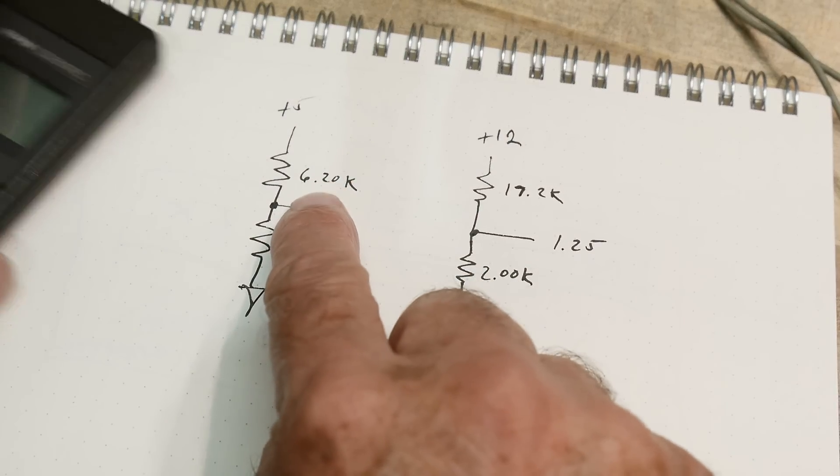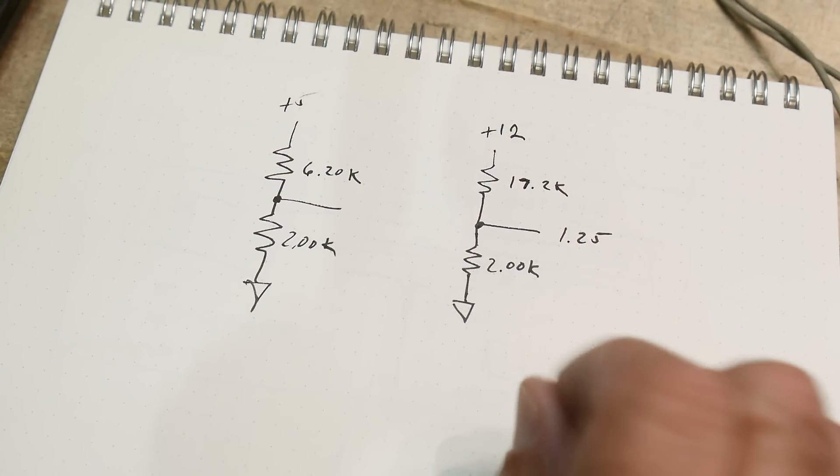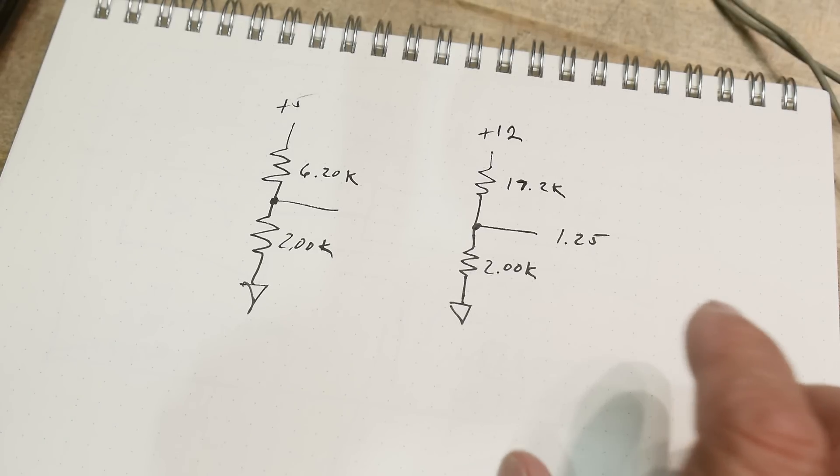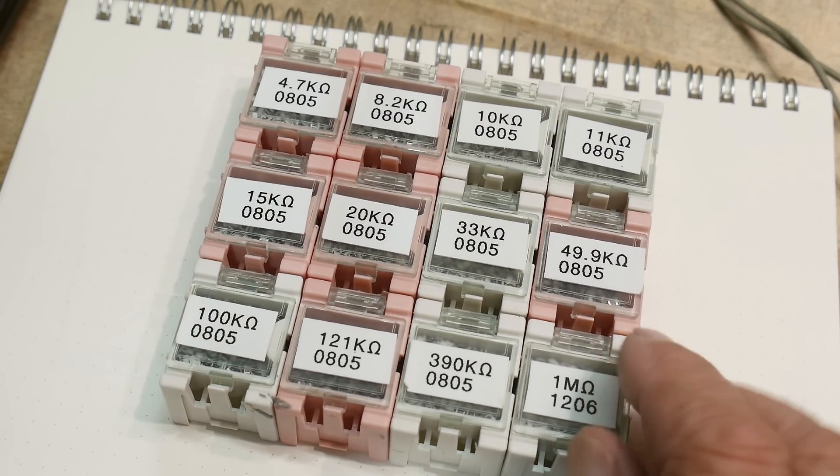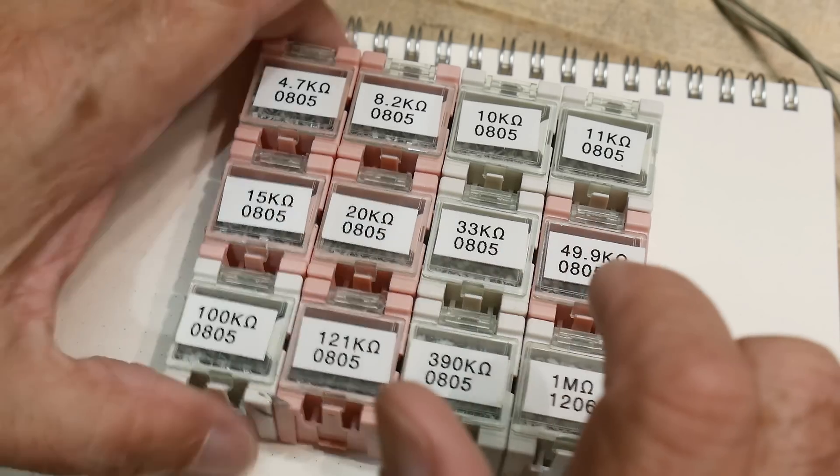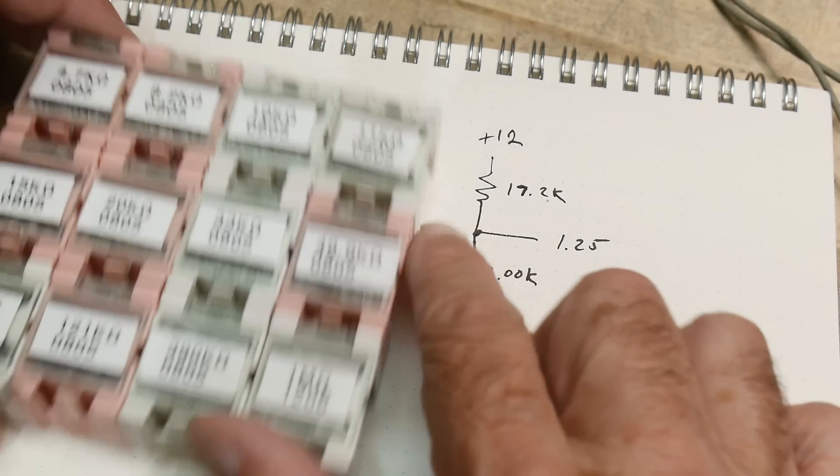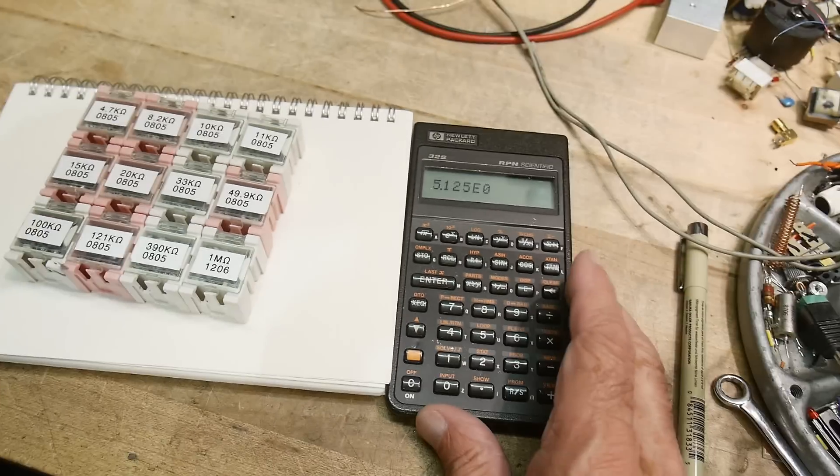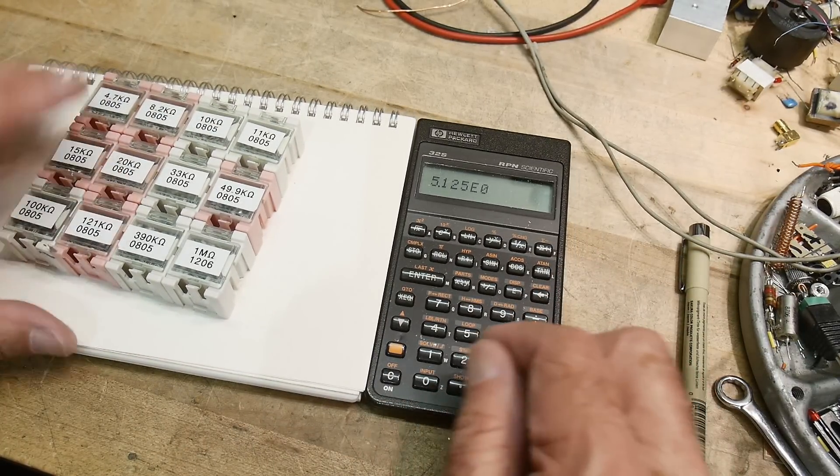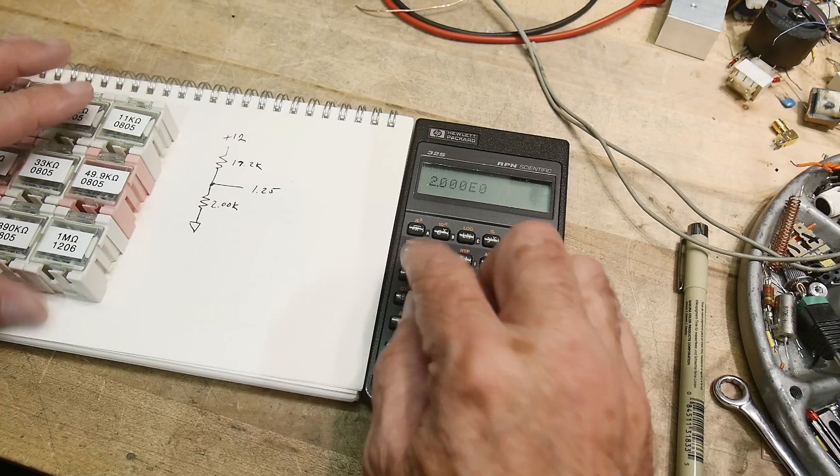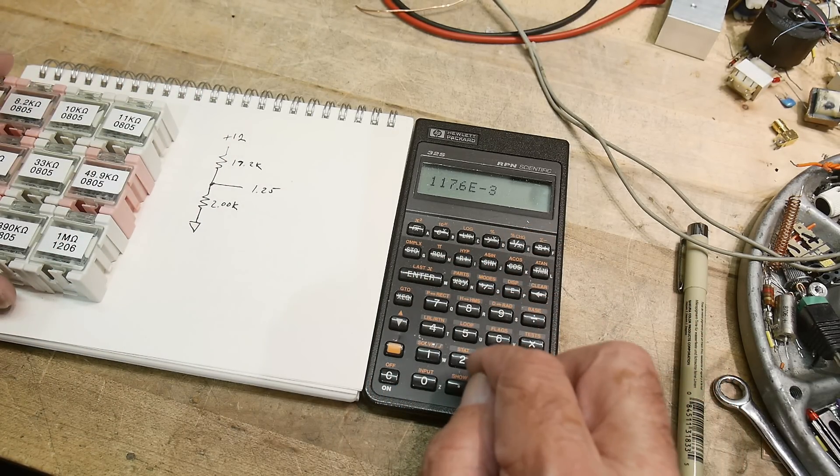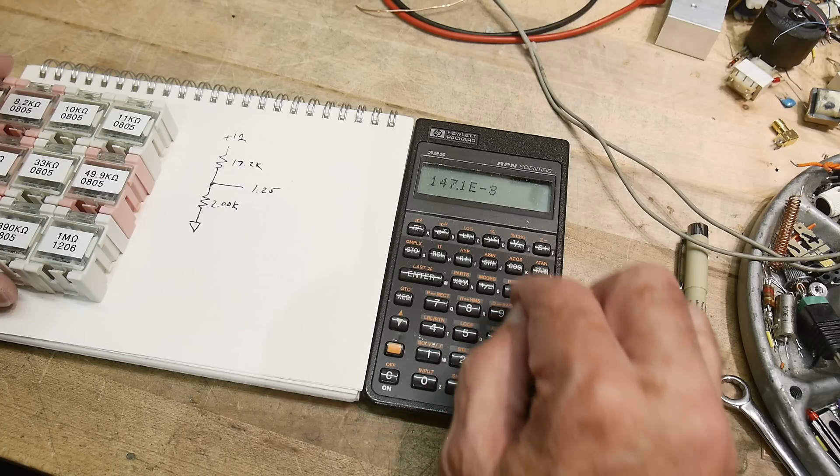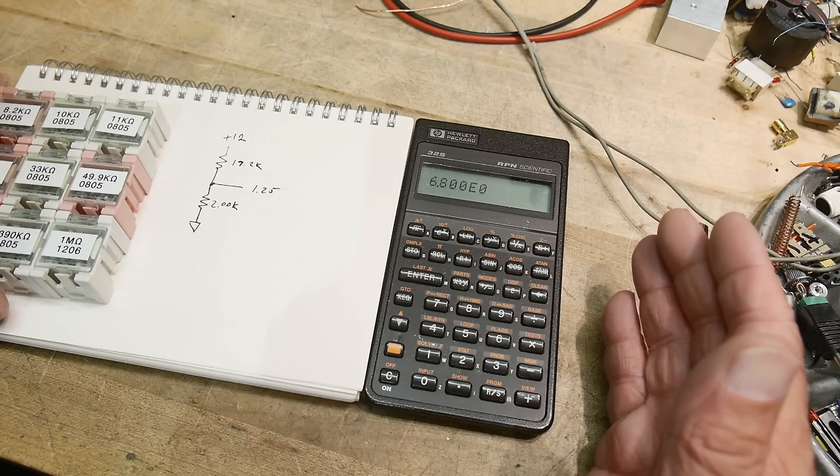I looked in my box and all I have is a 20k and a 15k. Let's see what happens at 15k.